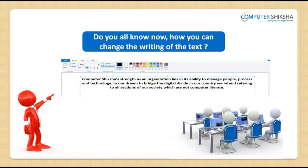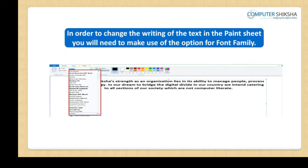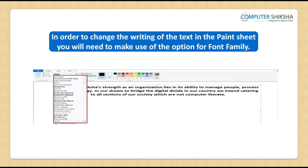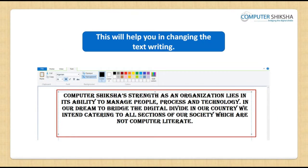Do you all know, after having typed text in the paint sheet, how you can change the writing of the text? In order to change the writing of the text in the paint sheet, you will need to make use of the option for font family. This will help you in changing the text writing.